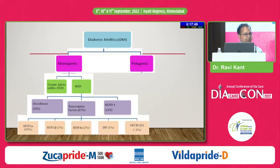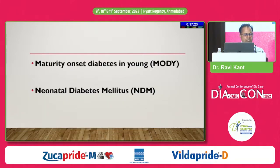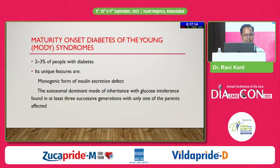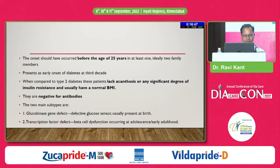I shall be focusing on glucokinase abnormality as well as the transcription factors. Principally, we have four or five transcription factors responsible for the majority of transcription factor abnormalities, and the most important is HNF-1-alpha, which is typical of MODY-3. This accounts for approximately 3% of people living with diabetes. The unique features are that this is a monogenic — a single genetic defect that you can pinpoint. It is autosomal dominant in nature, and you need at least three generations in your family history when suspecting MODY, with one of the parents affected.